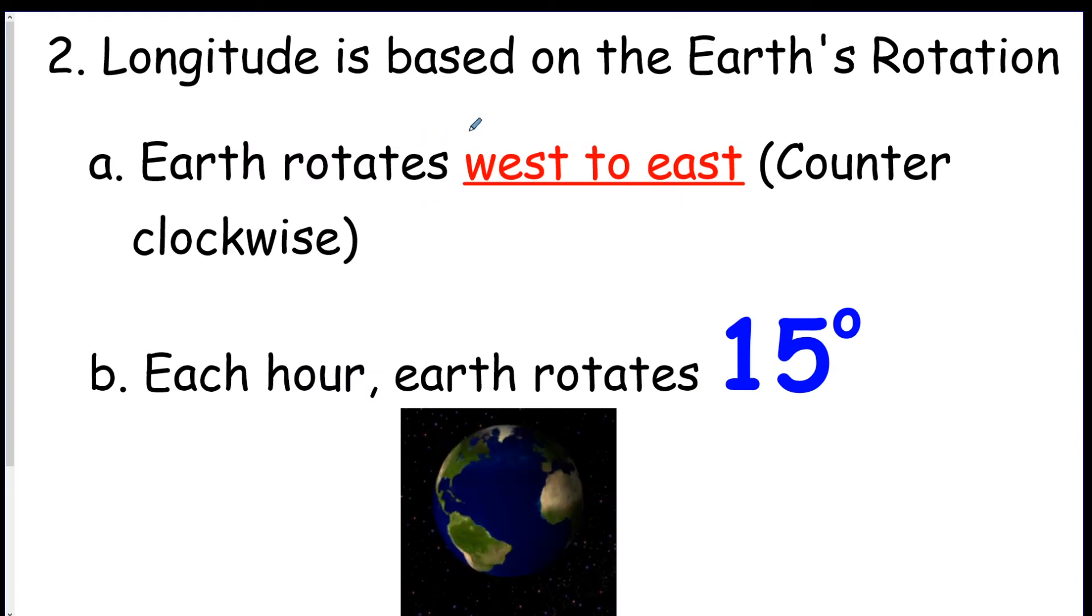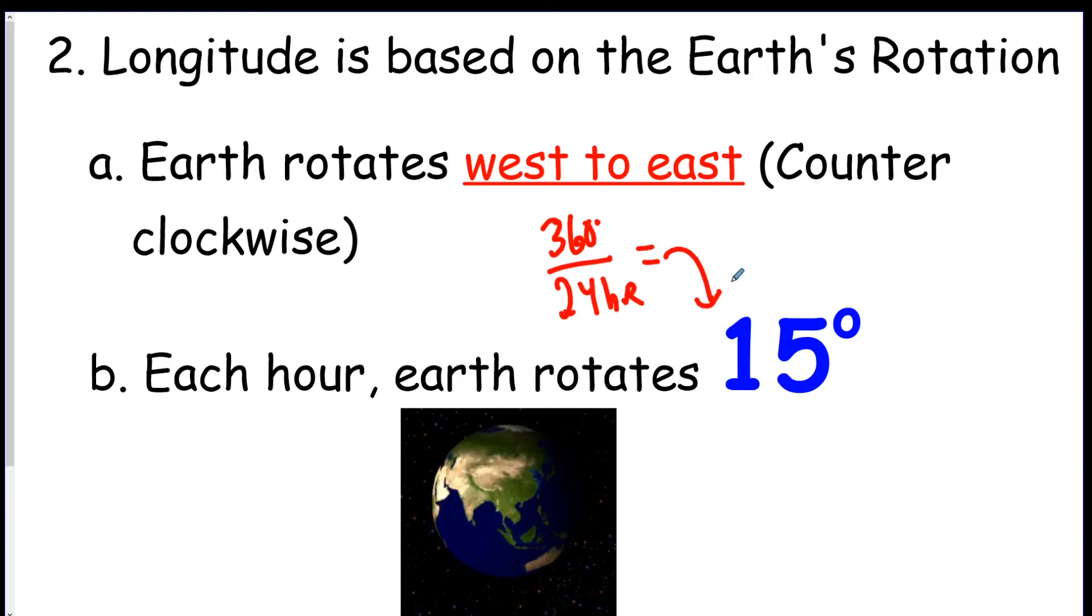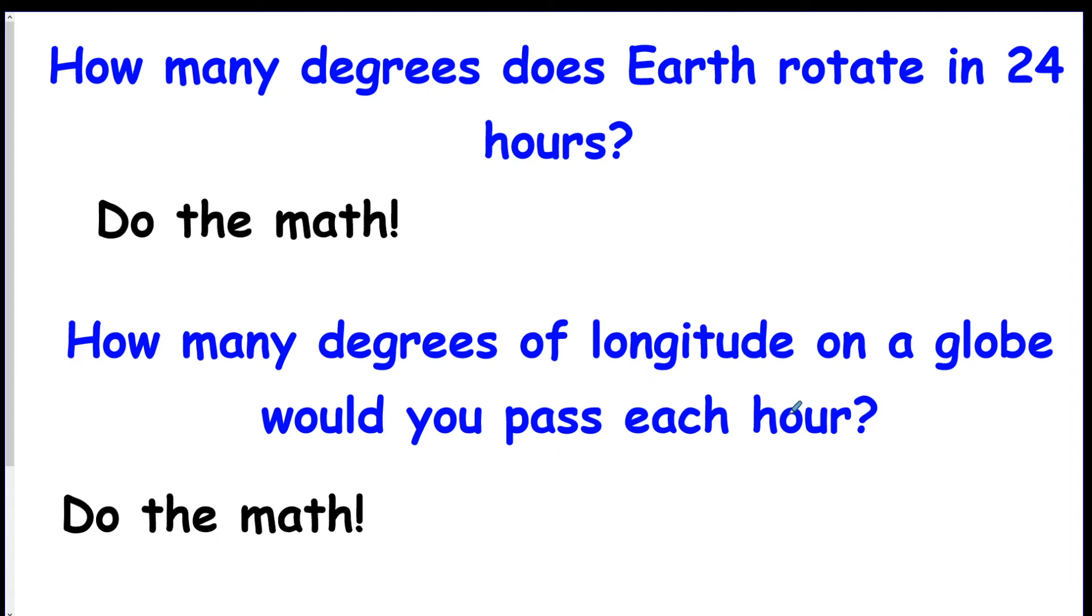So the lines of longitude are based on the Earth's rotation. We rotate west to east, like in this little picture down here, which is counterclockwise. We're rotating this way. Now, since we rotate one full spin in 24 hours, one full spin is 360 degrees. And there's 24 hours in a day. That means that we are actually moving 15 degrees every hour that goes by.